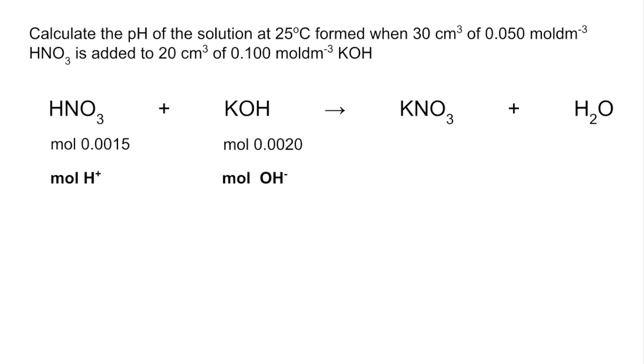The moles of H plus and the moles of OH minus are going to be the same because for every mole of acid we've got a mole of H plus, and for every mole of alkali we've got a mole of OH minus ions. So the next thing we need to do is look at how the moles compare and work out what's going to be left over. The OH minus ions are in excess, so the final solution is going to be alkaline.